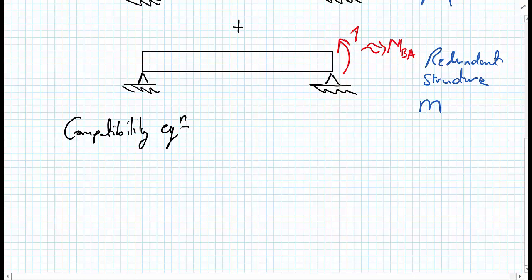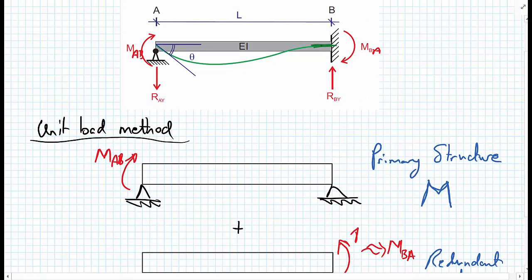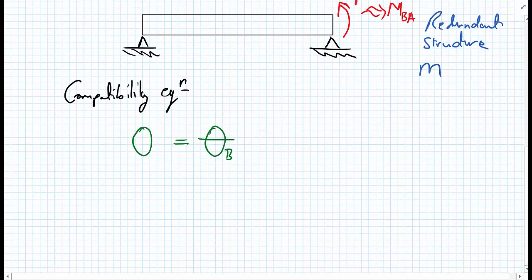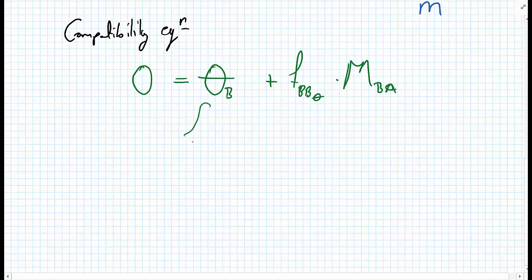Our compatibility equation at B states that we want zero rotation at the right-hand side due to the support condition. So we want zero rotation at B, which means phi to B — calculated using the unit load method — plus a flexibility coefficient at B in terms of rotations, multiplied by the real moment to bring us back to zero rotation, must equal zero. We can calculate phi to B from the integral from 0 to L of little m multiplied by capital M, all divided by EI, integrated over dx.